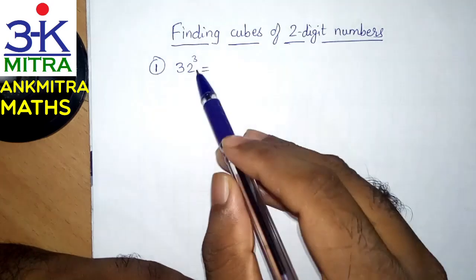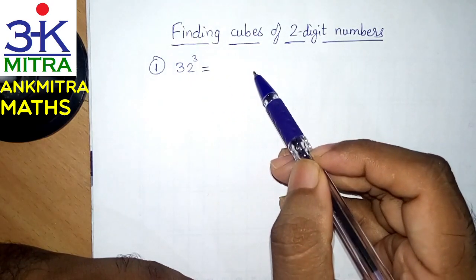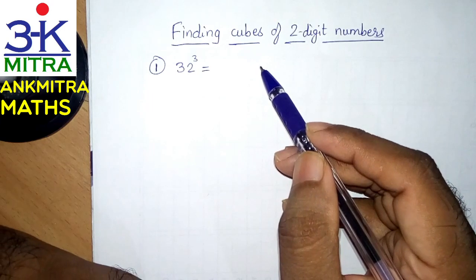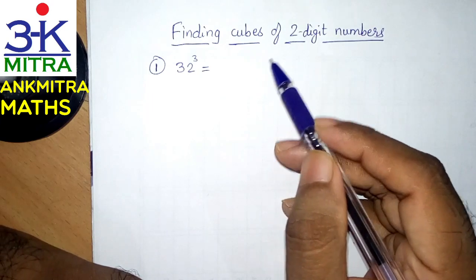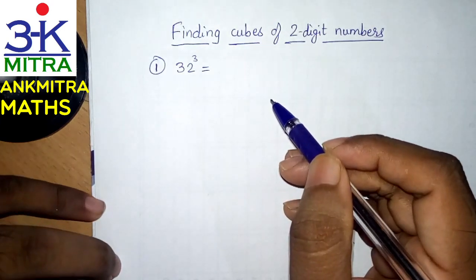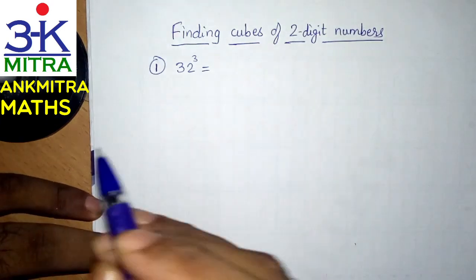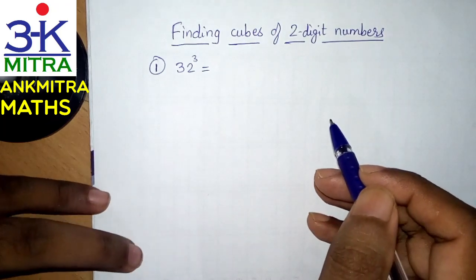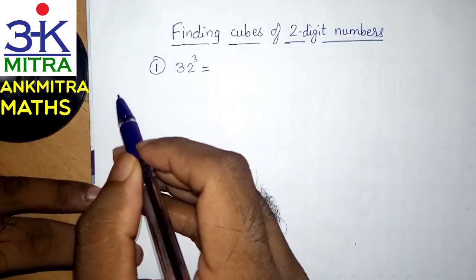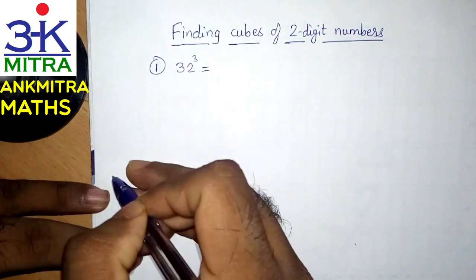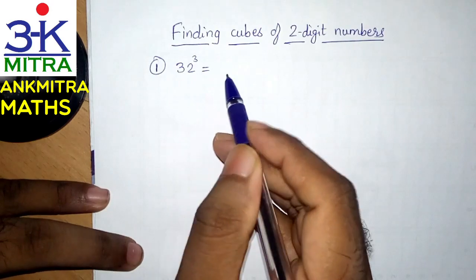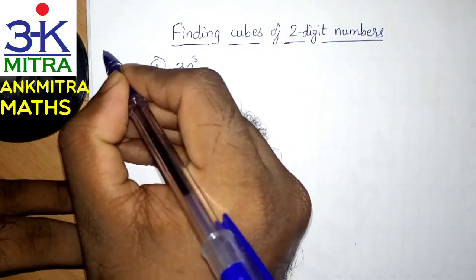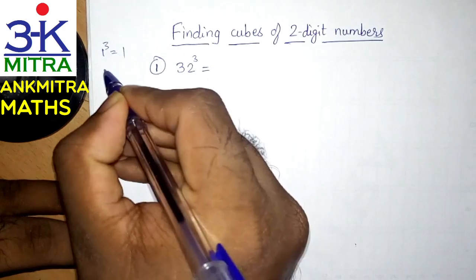The first thing that we need to be very comfortable with is the cubes of all one digit numbers — cubes and squares. Squares of all one digit numbers are very easy. So I will just write down cubes of all one digit numbers here before we start the examples. 1 cube, as we all know, is 1.